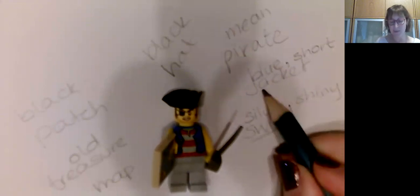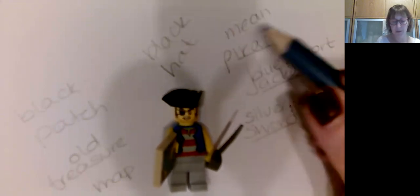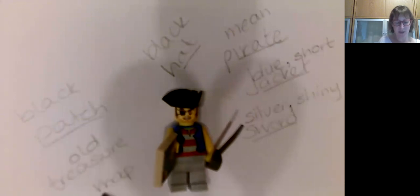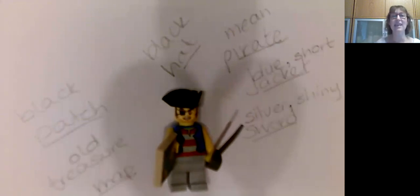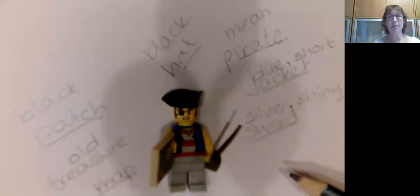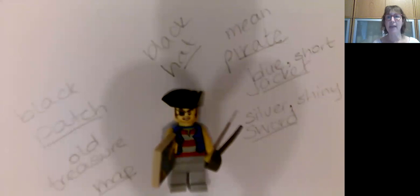So our nouns are the things that we can see, and the words that describe them are our adjectives. What I'd like you to do is find something around your house and say what it is — so it could be a piece of fruit, like an apple.